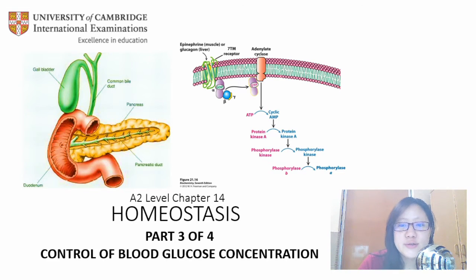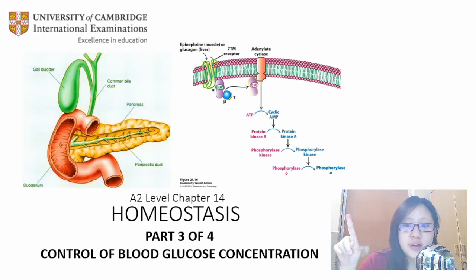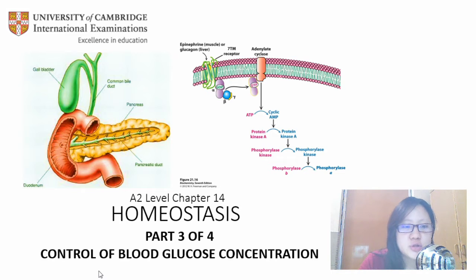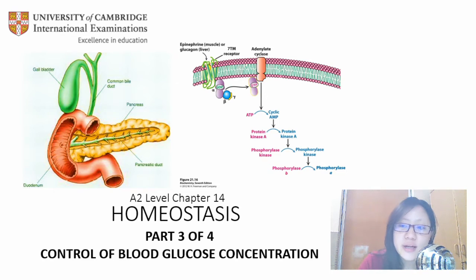Hello everyone and welcome to Chapter 14, Part 3: Control of Blood Glucose Concentration. We have done thermoregulation, which was the first topic, and second was what happens in the kidneys and osmoregulation. This third part is about control of blood glucose concentration. It's very common knowledge that control of blood glucose is by insulin as well as glucagon, and these two hormones are secreted in the pancreas. We're going to dive into that today in more detail.